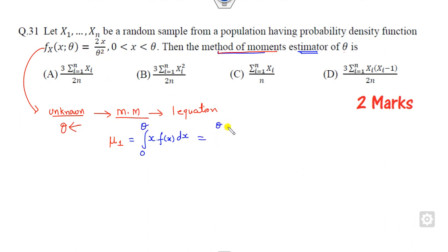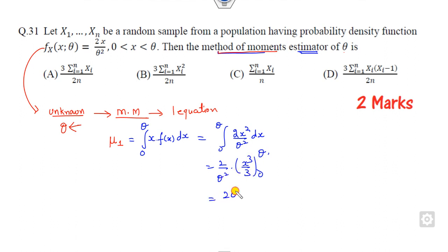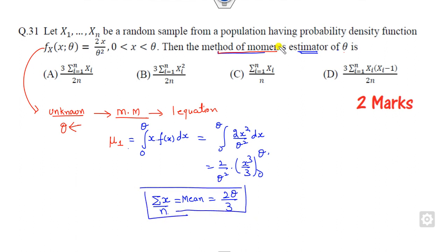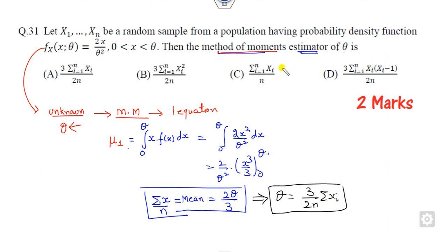If you substitute the value of f(x), you get 2x squared over theta squared. When you integrate, it will be x cubed over 3 evaluated from 0 to theta. After simplification, the mean equals 2 theta over 3. Setting this equal to the sample mean x-bar, your target is to find theta. You can easily find that theta equals 3x-bar divided by 2n. The right answer is option A.